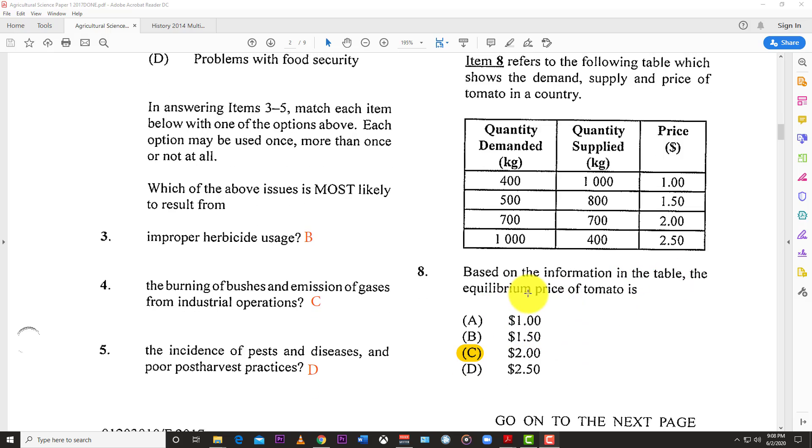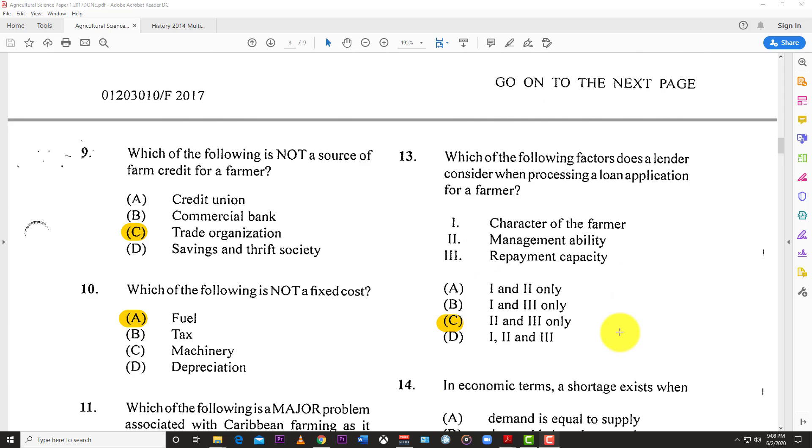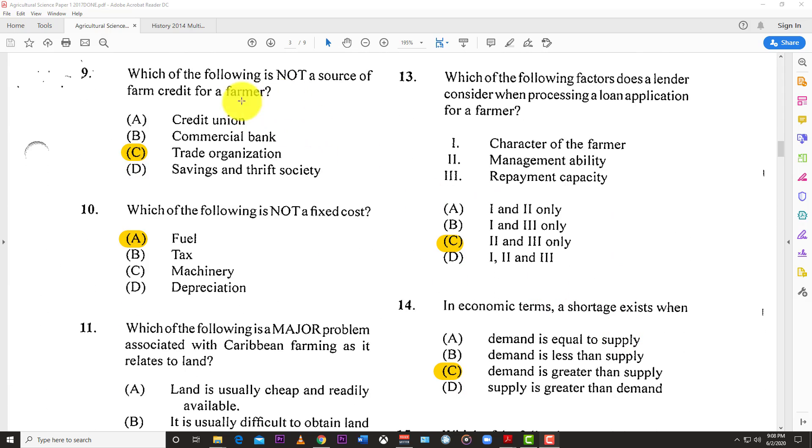Number eight refers to this diagram. Based on the information in the table, the equilibrium price of tomato is where supply and demand are equal. We see supply and demand right here: 700, 700. Therefore, the equilibrium price would be two dollars.